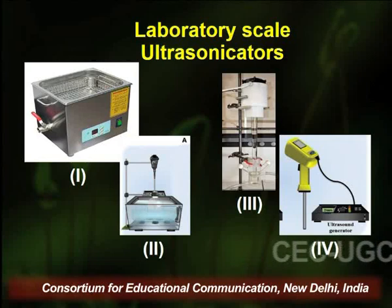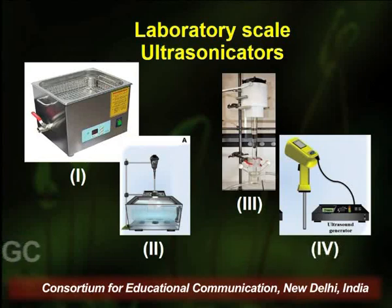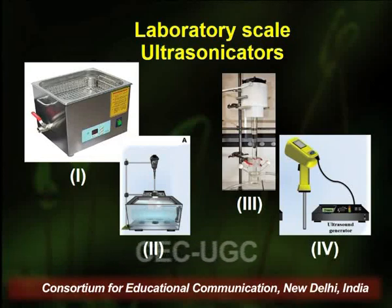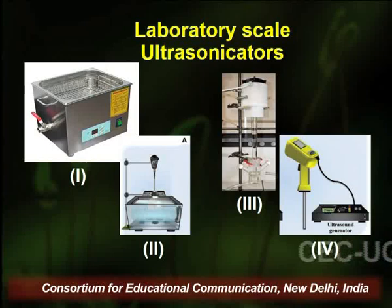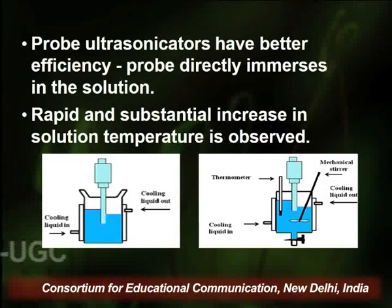Earlier, probe emitters or probe sonicators were made of titanium, but it was found that during extraction, titanium particles fragmented into the extract. Therefore, titanium is now being replaced by quartz or Pyrex material. The image shows different types of ultrasonicators: the first two are bath sonicators — one normal and one equipped with a stirrer — and the third and fourth represent probe sonicators.